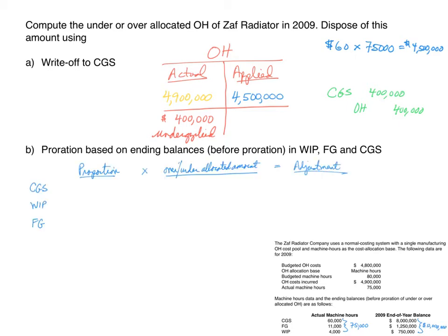The first step is to calculate a proportion for each T-account. Cost of goods sold had an $8,000,000 ending balance out of a total $10,000,000, giving a proportion of 0.80 or 80%. Work in process had a balance of $750,000 out of $10,000,000, giving 0.075 or 7.5%. Finished goods had a $1,250,000 balance, giving 0.125 or 12.5%.